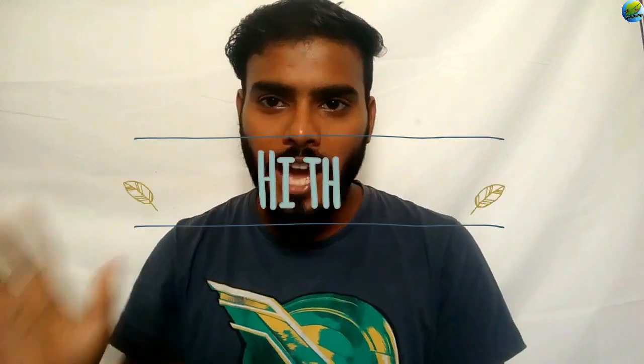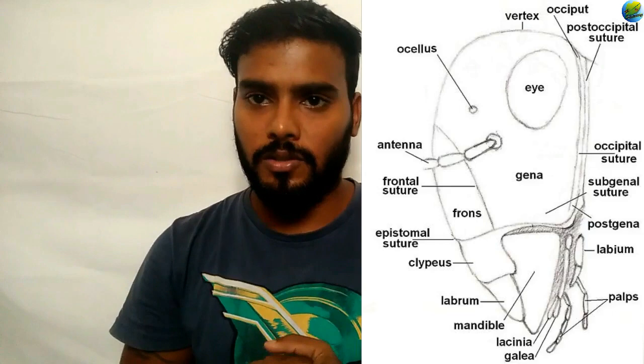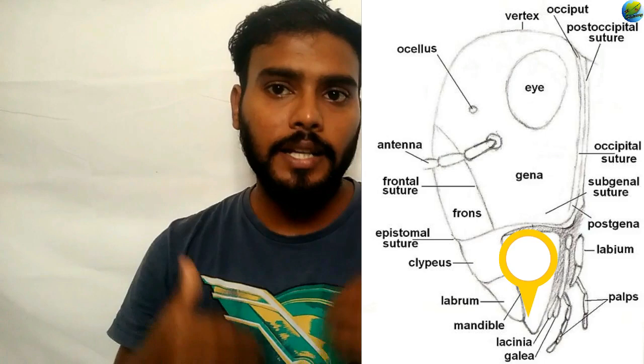Hi friends. In our previous class we discussed about the cranium of the insect head, which is the only sclerotized part, consisting of sclerites and sutures. The insect head consists of three most important appendages: compound eyes and simple eyes, the mouth parts, and the antenna. These are the three major appendages of the insect head.